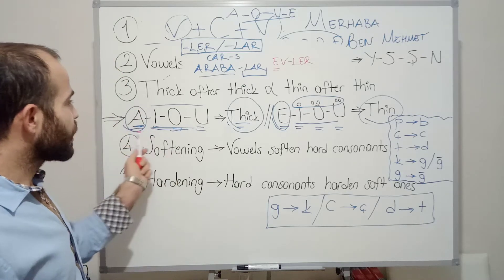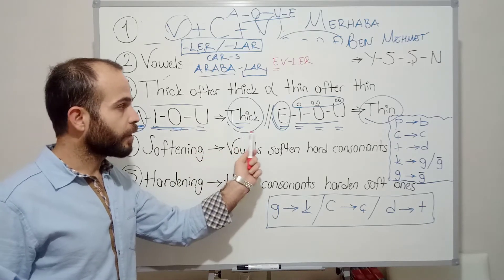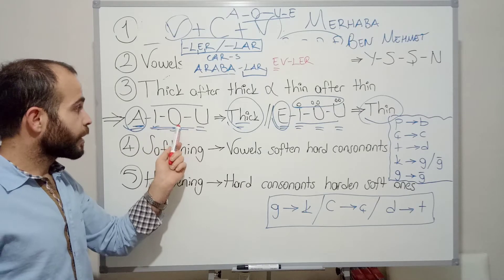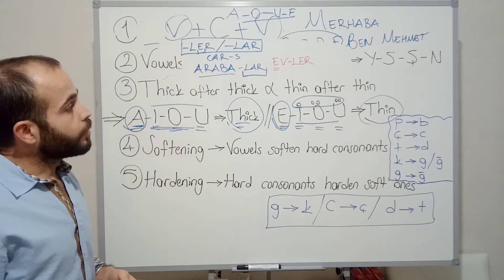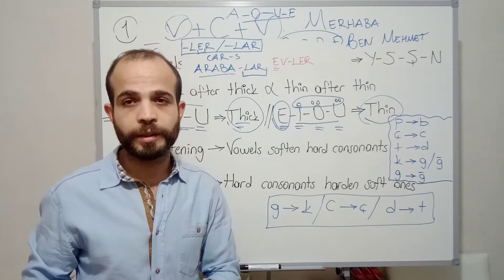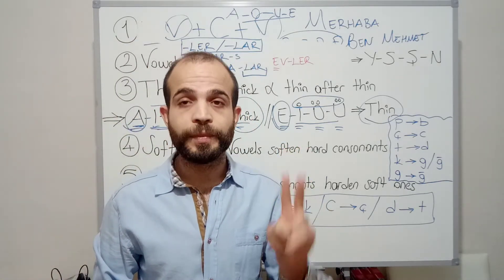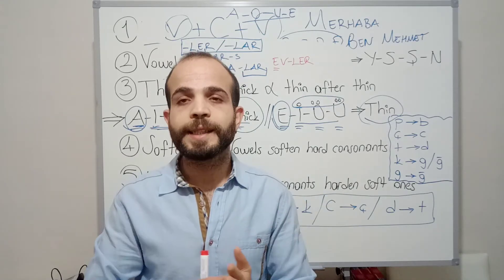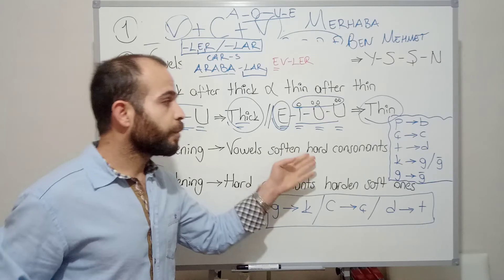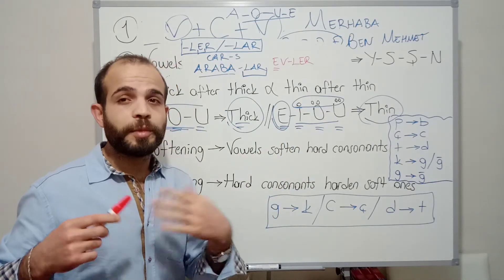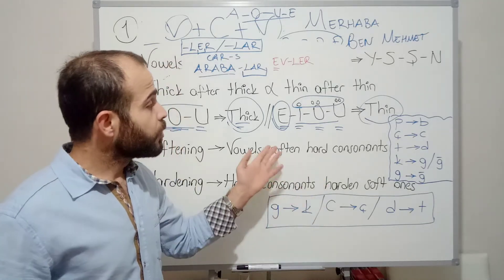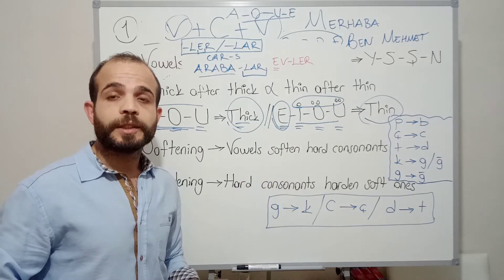As I said, you don't need to worry — this part is easy. You can easily remember the thick ones and the thin ones. The ones with dots are thin, and E is also thin. The ones without dots on top are thick, and A is also thick. Next, we have two other rules which I call the softening and hardening rules. In Turkish, we have two groups of consonants: soft consonants and hard consonants. You don't have to memorize these now — you will learn them slowly during the process, as we will be making lots of examples in other lessons.